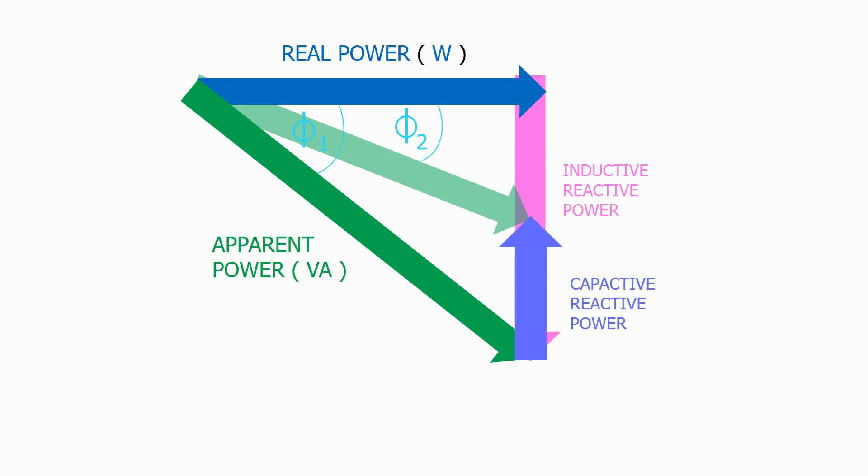Using basic trigonometry, the value of the capacitive reactive power, Qc, equals the magnitude of the real power, multiplied by tan phi1 minus tan phi2, where phi1 is the power factor of the original network, and phi2 is the power factor of the improved network.